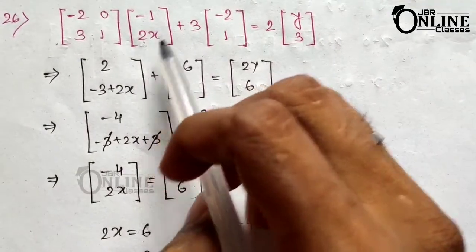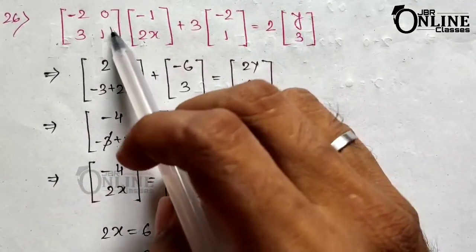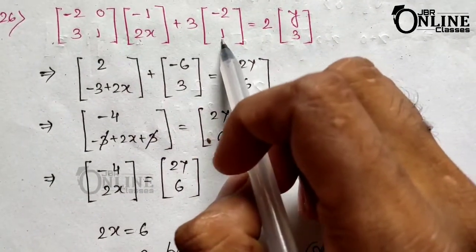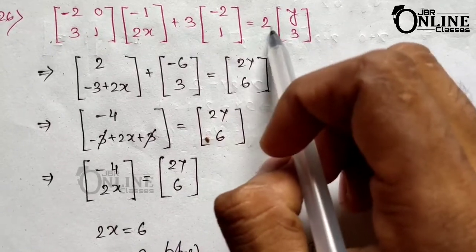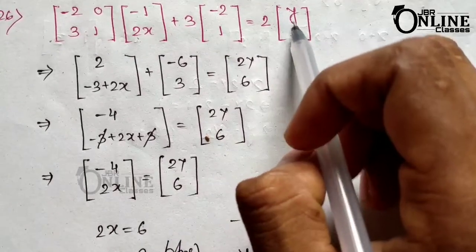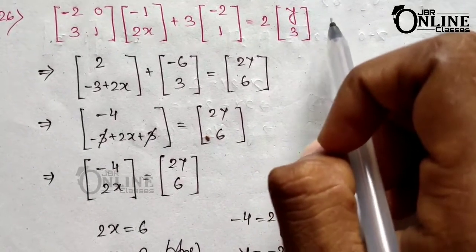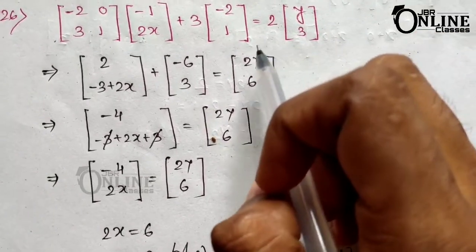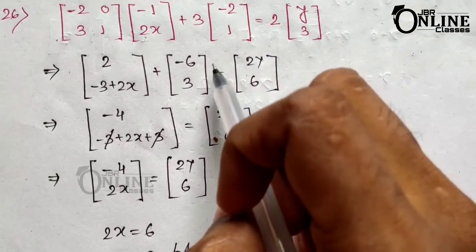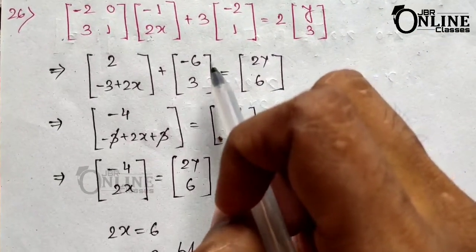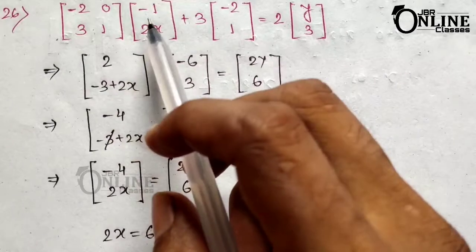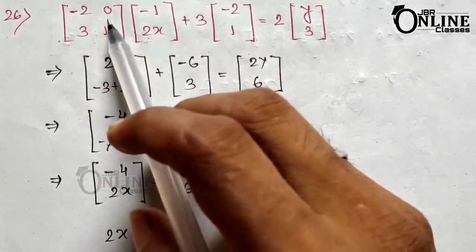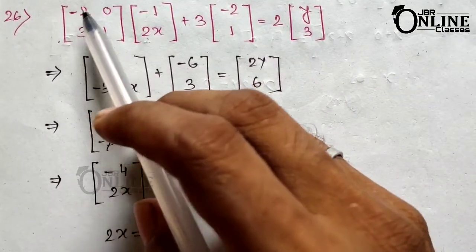The first matrix is multiplied by x, plus 3 times the matrix minus 2, 1, and that equals 2 times y, 3. The question is: you have to find out the value of x and y. So first we multiply these two matrices.